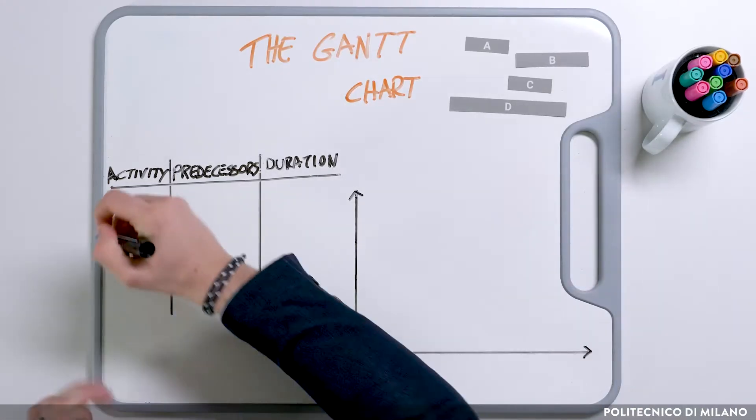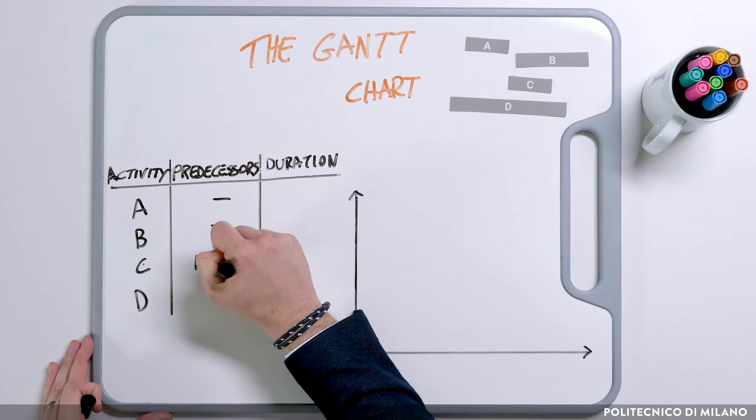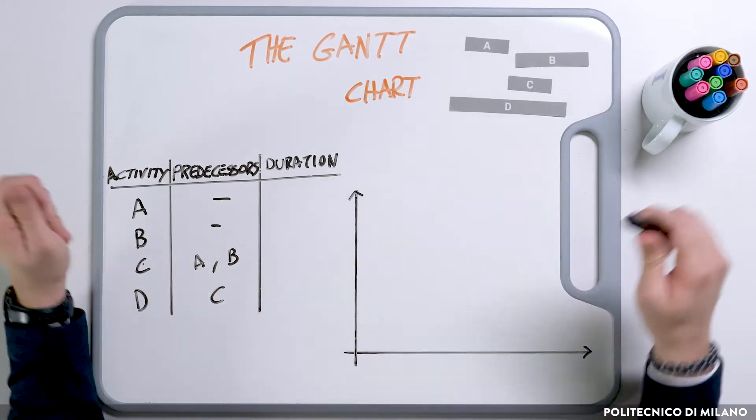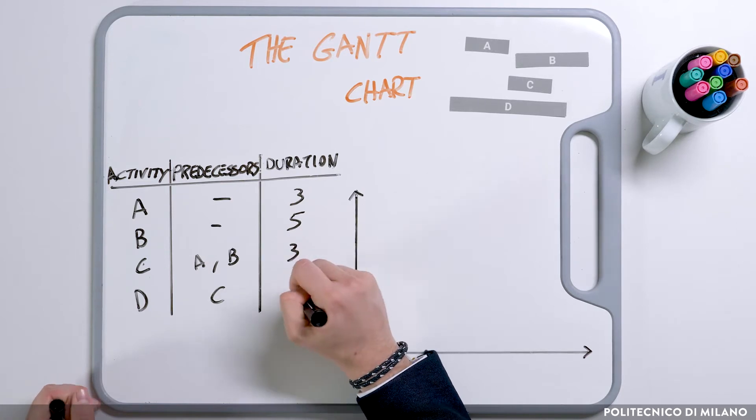Once we define the logical relations among activities, we know for each activity which are its predecessors and its duration. For example, we may have a very simple project with four activities A, B, C, and D. A and B have no predecessors, while C has both A and B as predecessors, and D has C as its predecessor. A lasts 3, B lasts 5, C lasts 3, and D lasts 7.